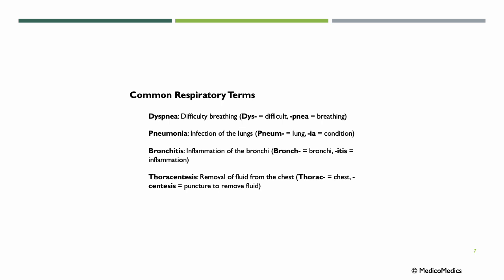Now let's review some common respiratory terms. DYSPNEA means difficulty breathing — DYSP means difficult, and PNEA means breathing. PNEUMONIA means infection of the lungs — PNEUM means lung, and -IA means condition, so we have a condition of the lung, specifically infection. BRONCHITIS: BRONCHO plus -ITIS means inflammation of the bronchi. THORACENTESIS means the removal of fluid from the chest — THORAC is chest, and CENTESIS means puncture to remove fluid.